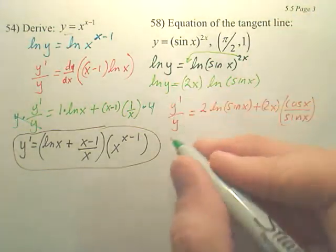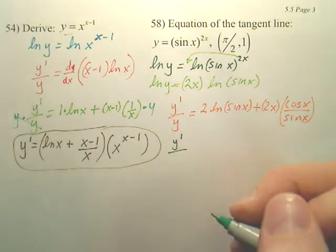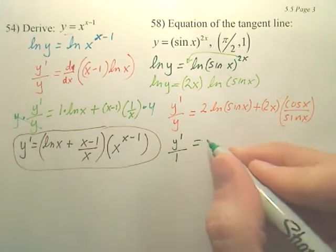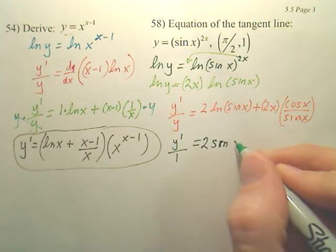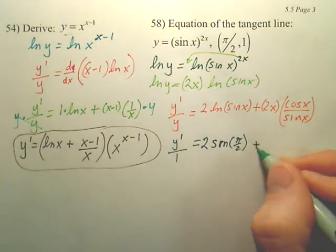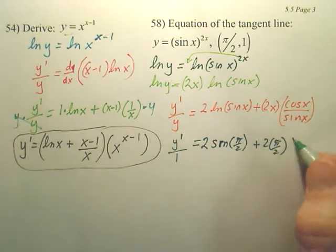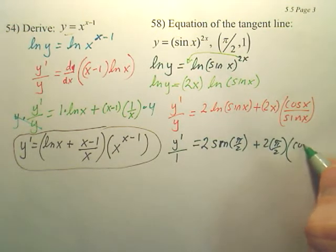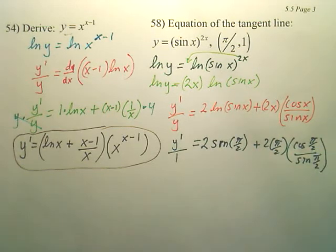Plug x and y in. So, I got a y prime and then over, what's y? Y is 1 and it's going to be 2 sine and x is pi over 2 plus 2 times x, which is pi over 2, times cosine pi over 2 over sine pi over 2.